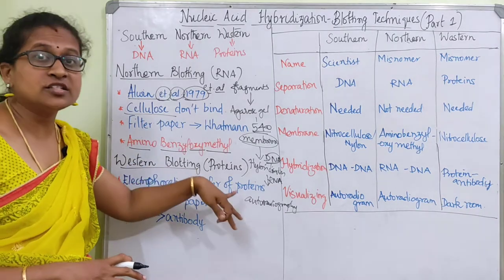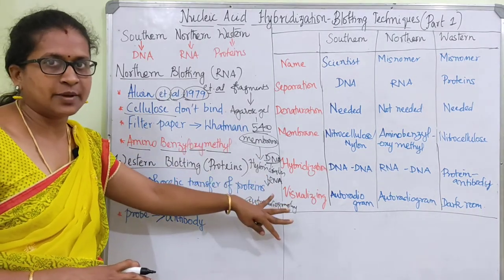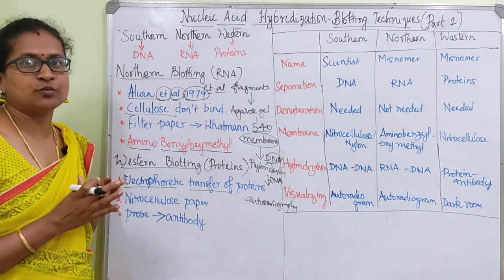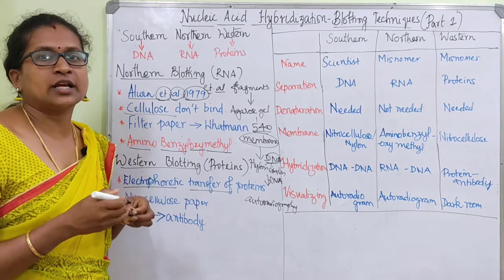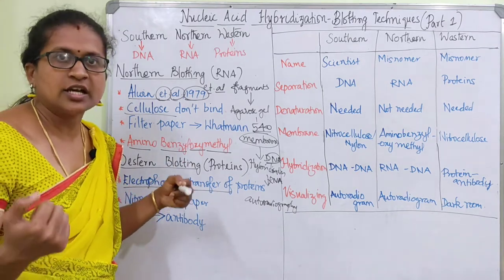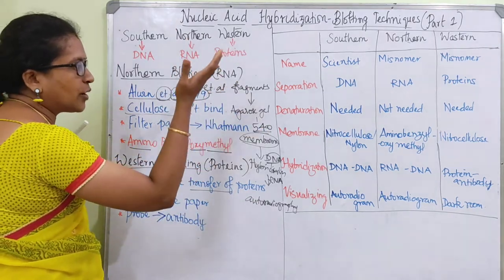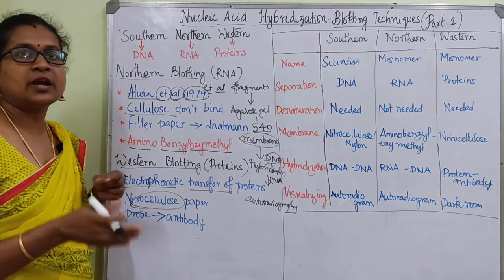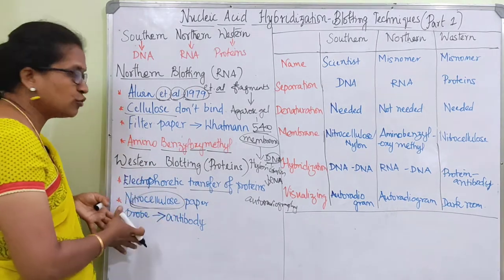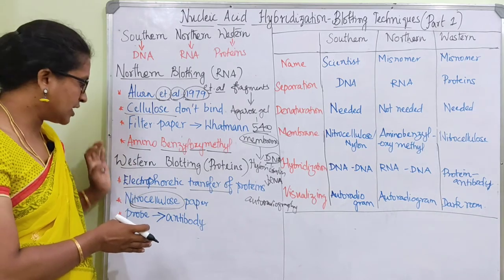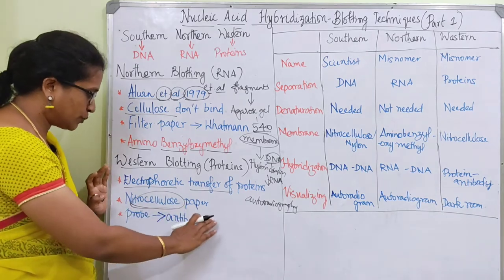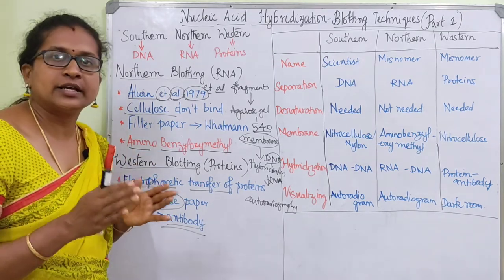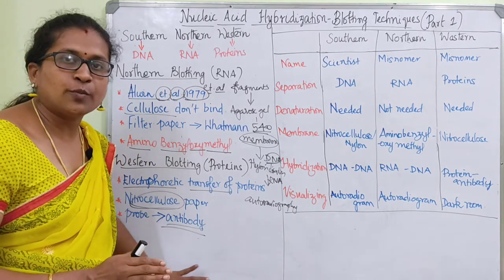Western blotting is the electrophoretic transfer of proteins. We separate proteins based on molecular weight using the same procedure - denaturation and agarose gel run. Nitrocellulose paper is used for western blotting. But for the probe, we use antibodies. If we know one protein, there is a specific antibody for it, so when we apply the probe we use antibodies.